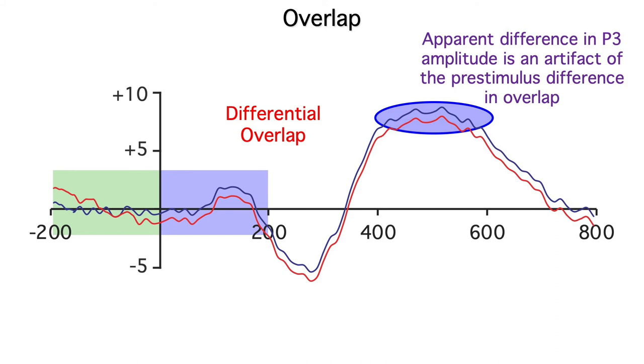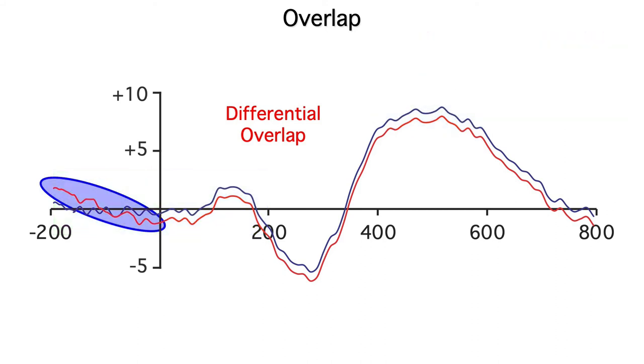You can also look for signatures of differential overlap in the data. If you see a steeper tilt during the baseline period in one condition than in another, you should be concerned. And if you see effects that begin right around time zero and last for hundreds of milliseconds, you should be concerned.